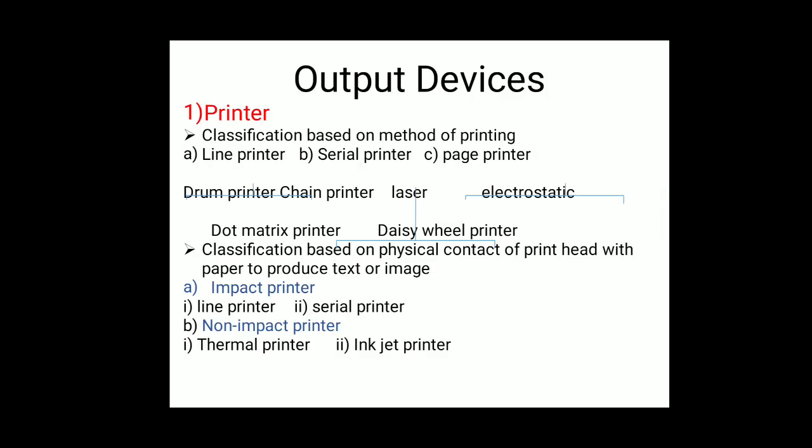Output devices include monitors, printers, and plotters. Printers are classified into line printer, serial printer, and page printer. Output devices translate information from machine language into a form that humans can understand. They are classified into two subtypes: soft copy output devices and hard copy output devices.